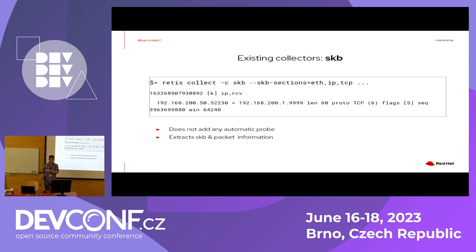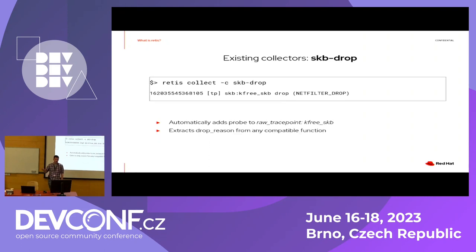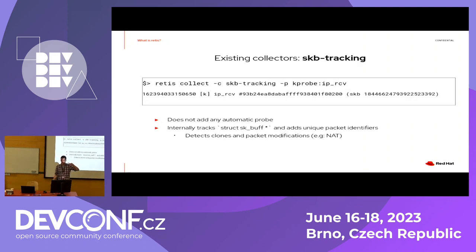We have many existing collectors. The SKB collector collects packet information. The NFT collector — shown in the first example — can also filter on the verdict of a netfilter rule. The skb_drop collector extracts drop reasons from a special function in the kernel. We also have SKB tracking, which does extensive tracking of packets — a very important feature in retis.